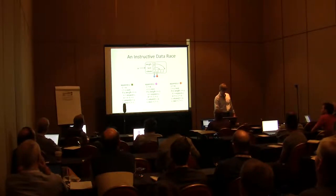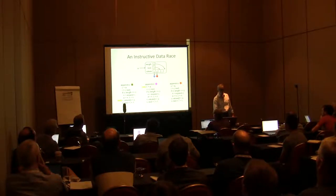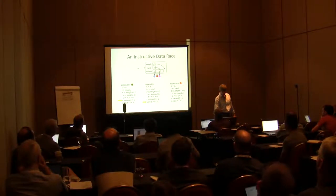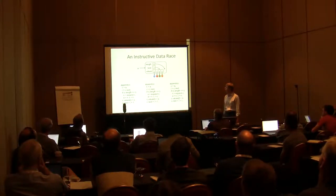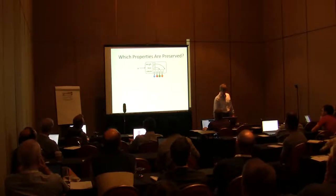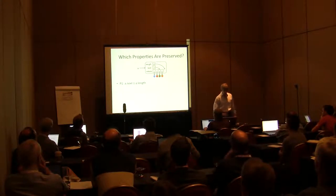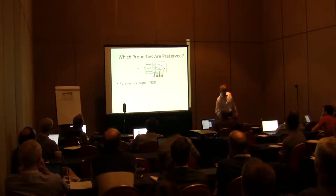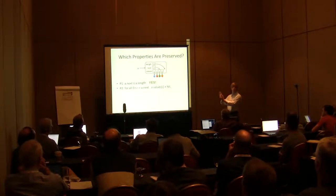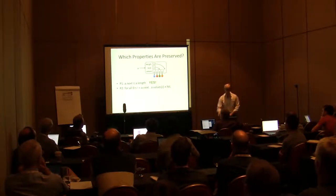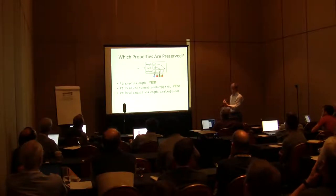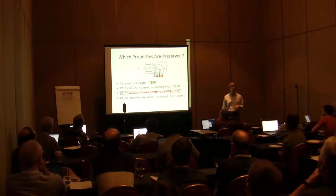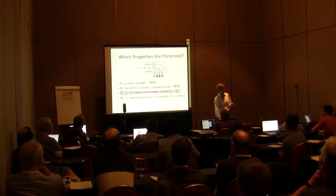Let's look at an instructive data race — three appends at the same time. First guy goes all the way through. Next guy inserts the pink guy, next guy inserts the orange guy, and finally the green object comes through, overwrites the pink object, and bumps the next pointer back. Which properties are preserved? P1: yes. P2 — prefix before next is all non-null: yes. P3 — everything at next pointer and after is nil: no, that property is not preserved. P4 — history property: no, because the pink guy is nowhere to be seen and the orange guy is arguably not in the right place.